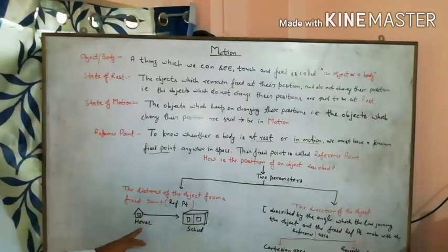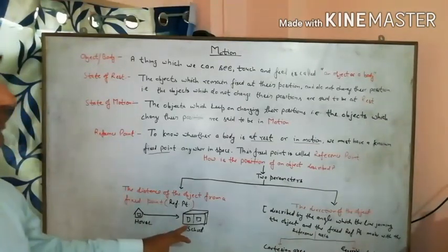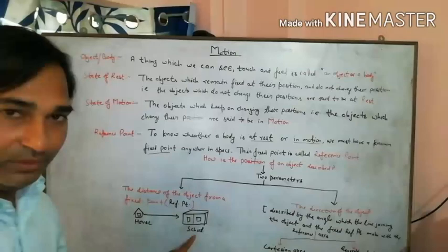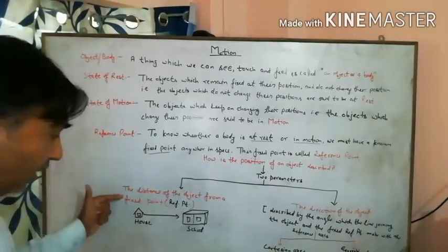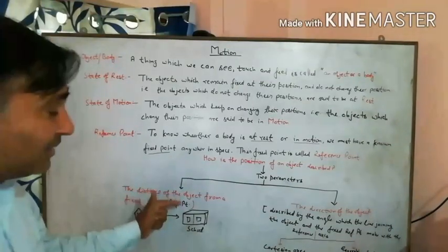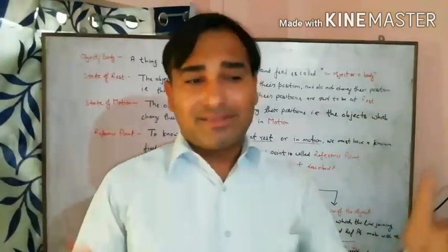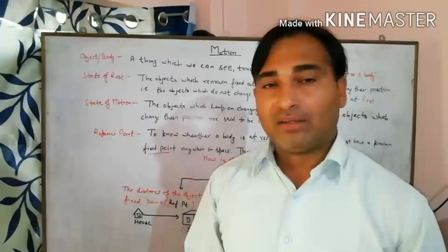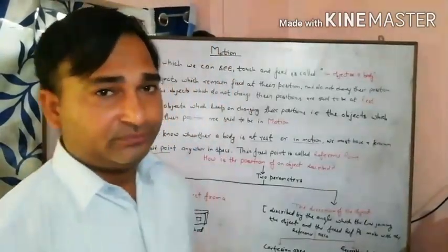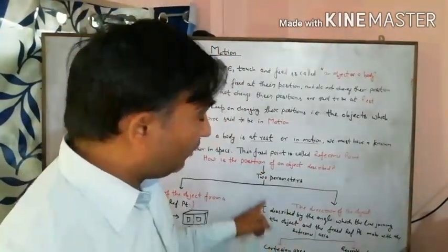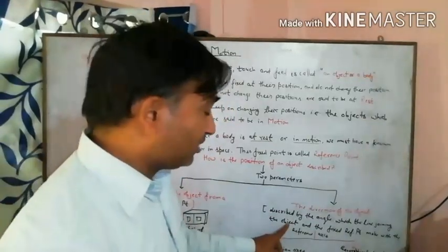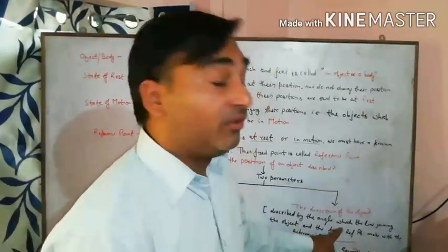The house is the reference point and we consider the distance of the school from it. The distance of an object from a fixed point is described by length — the distance between two bodies. The second parameter is the direction of the object, which is described by the angle which the line joining the object and the fixed or reference point makes.